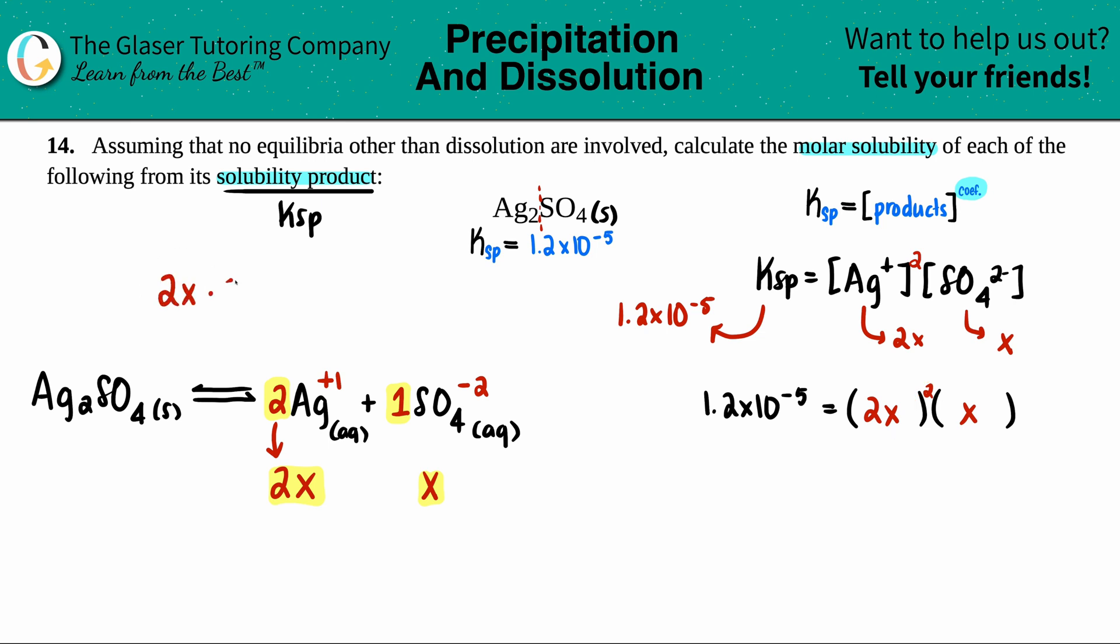You have two 2x values. And if we just do that, multiply the numbers first, 2 times 2 is 4. x times x is x to the second. So I'm just going to erase this first part and say that that is the same as 4x to the second. Drag along the other x value. I have 1x. I'm combining it with 2xs. So I have a total of 3xs. So 1.2 times 10 to the negative fifth equals 4x cubed.